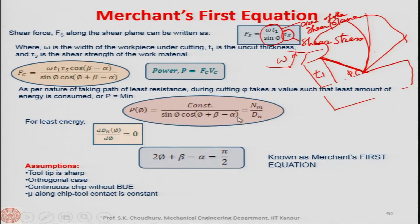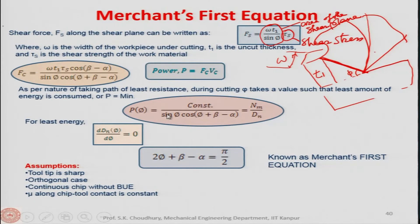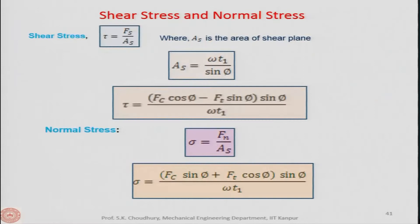Taking the first derivative and setting it to zero gives: 2φ + β − α = π/2, where β is the friction angle and α is the rake angle. This equation is known as Merchant's first equation.